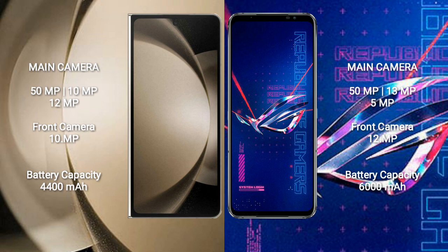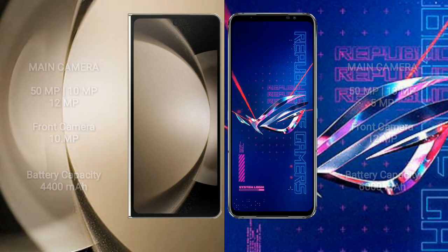Samsung Galaxy Z Fold 5 has a 4,400mAh battery with 25W fast charging support. Asus ROG Phone 6 Pro has a 6,000mAh battery with 65W fast charging support.